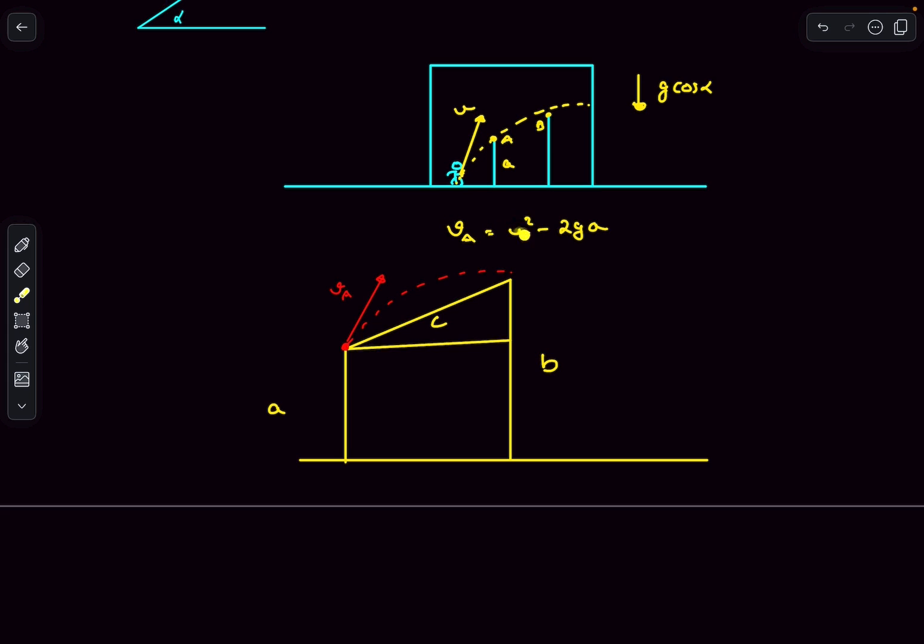If I want to ensure that with the minimum effort I have to cover a range of c, then c has to be the maximum range for this projectile motion. Because let's say if the maximum range was more than c, then the projectile has the potential to cover a distance more than c. We don't want that. We want this to be the minimum effort case.